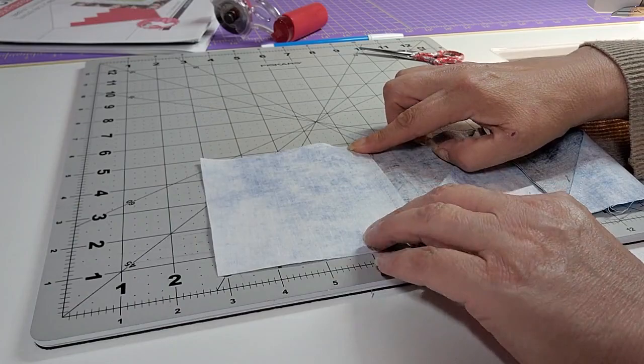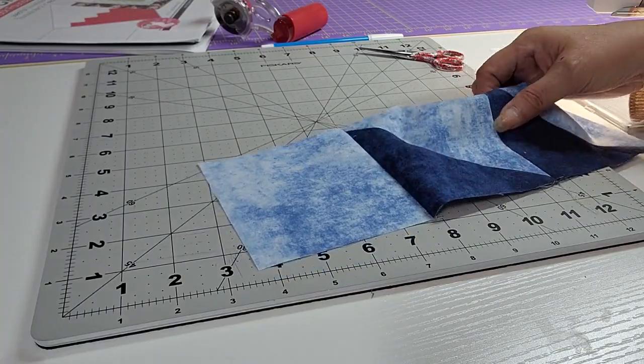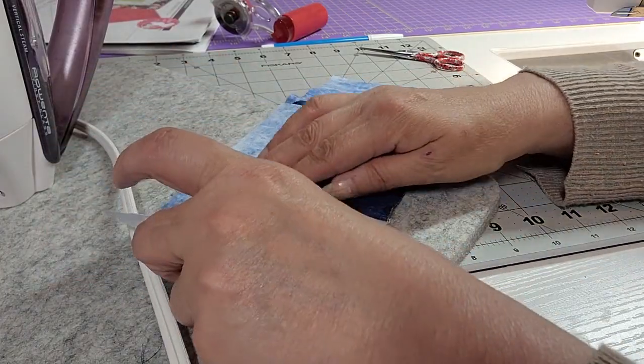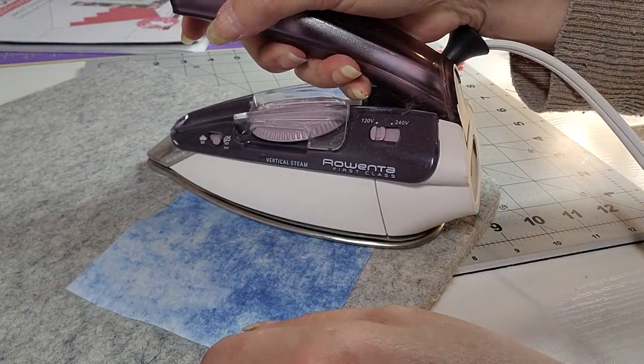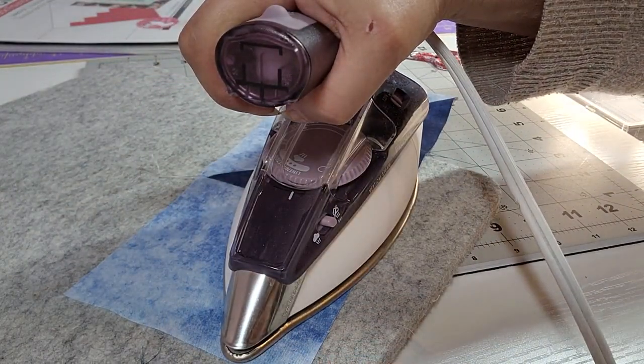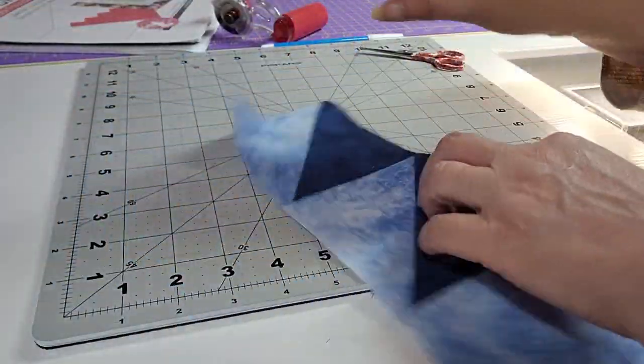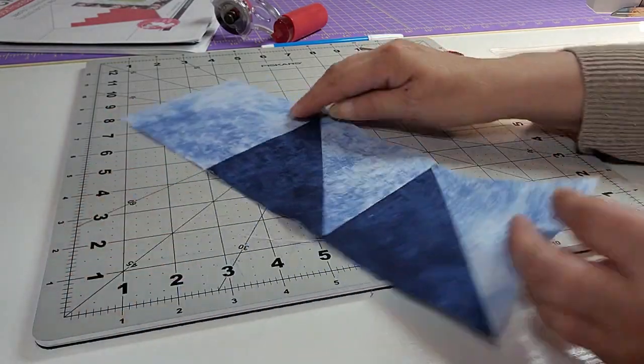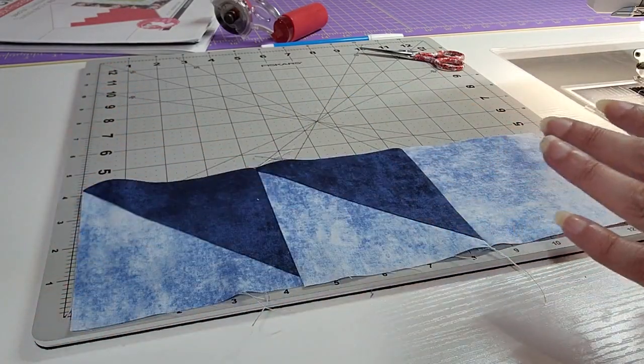I'm going to sew my quarter of an inch seam from one end all the way to the other end. Then again, finger press, and then press with your iron.